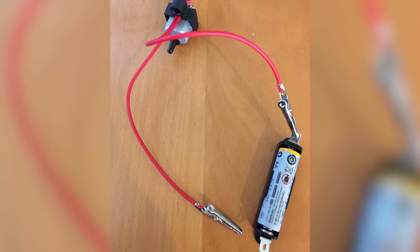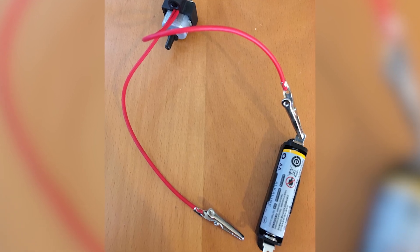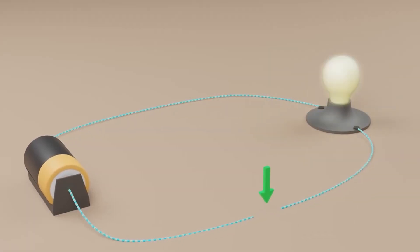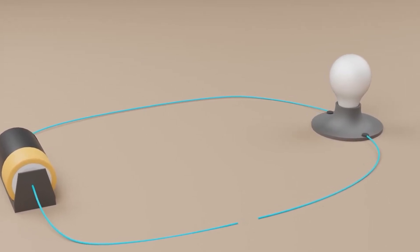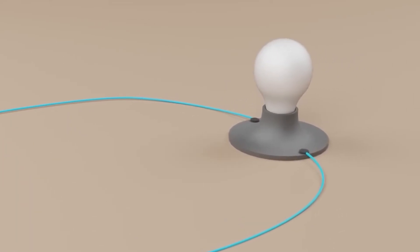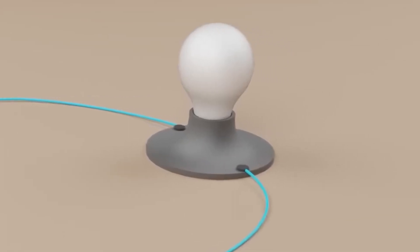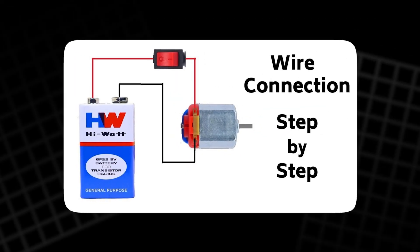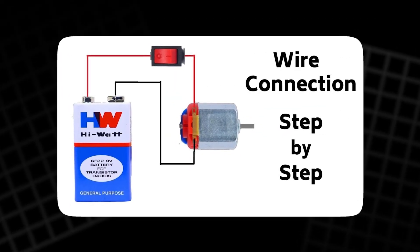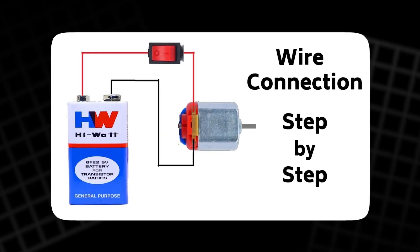But for the circuit to work, it must be complete. If there's a break anywhere, whether it's a switch or a cut in the wire, the flow of electricity stops, and so does the light. This is called conventional current flow, where electricity moves from the positive side of the battery through the wire and back to the negative side.